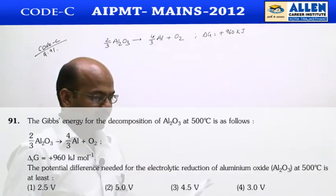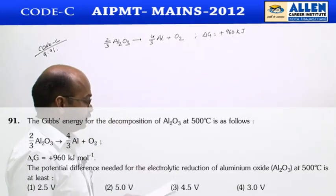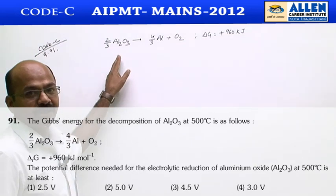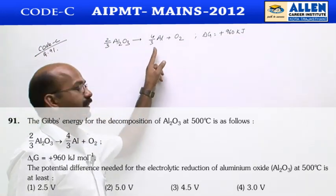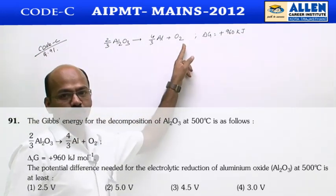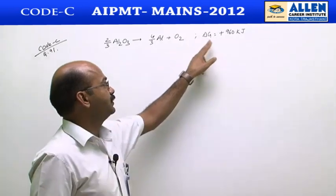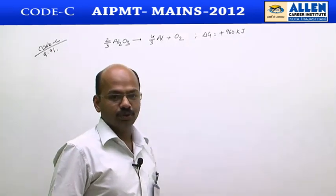In code C, question number 91. The given equation is 2/3 Al₂O₃ → 4/3 aluminium + O₂, and its delta G is also given as plus 960 kilojoules.